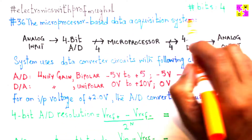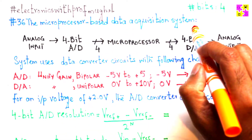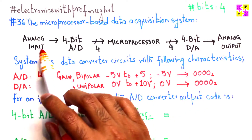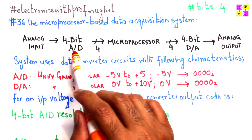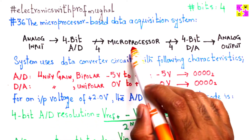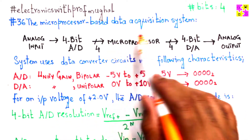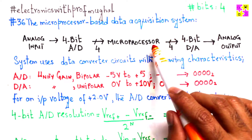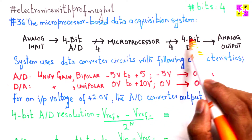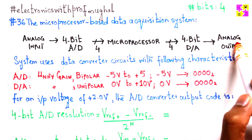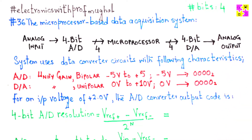The microprocessor-based data acquisition system has a very conventional analog input that goes through an analog-to-digital converter, which is a 4-bit system. It then feeds into a microprocessor where all operations take place, and then the microprocessor throws out an output in digital-to-analog format, which is then displayed as an analog output.